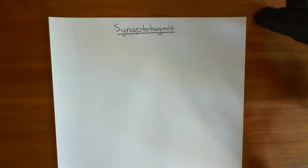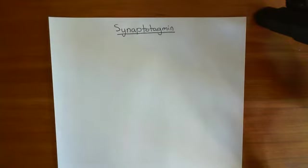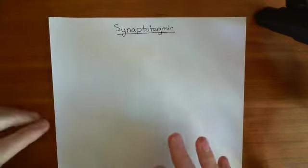We're just going to review the basic neurophysiology of synapses. Then what we'll talk about is synaptotagmin — we'll talk about its structure, we'll talk about C2 domains and what those are, and then we'll talk about the different types of it, and then a bit of experimental evidence for how important it is.